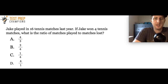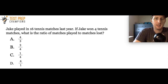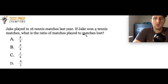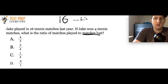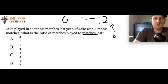Here's another example with a slight twist. Jake played in 16 tennis matches last year. If Jake won 4 tennis matches, what is the ratio of matches played to matches lost? Assume he either won or lost every game — no ties. The first twist is that we're not directly told the number of matches lost, so we do a slight subtraction: 16 minus 4 equals 12, so he lost 12 matches.